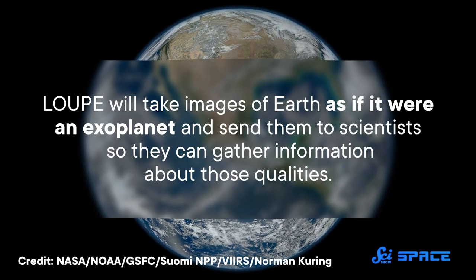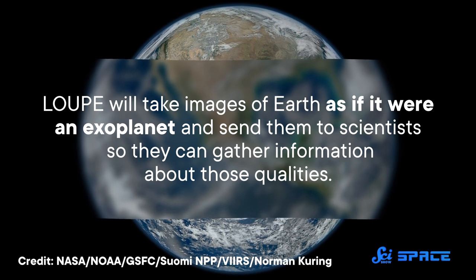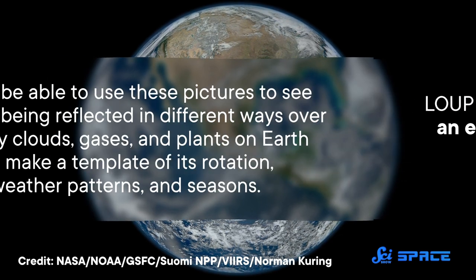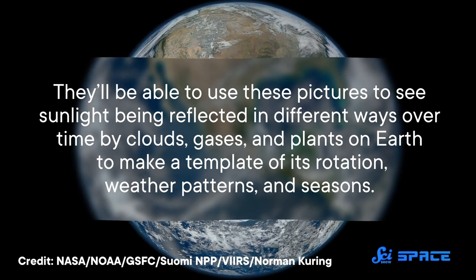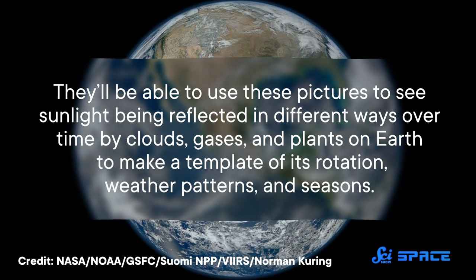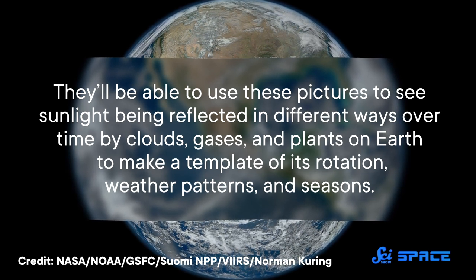LOOP will take images of Earth as if it were an exoplanet and send them to scientists so they can gather information about those qualities. They'll be able to use these pictures to see sunlight being reflected in different ways over time by clouds, gases, and plants on Earth to make a template of its rotation, weather patterns, and seasons.